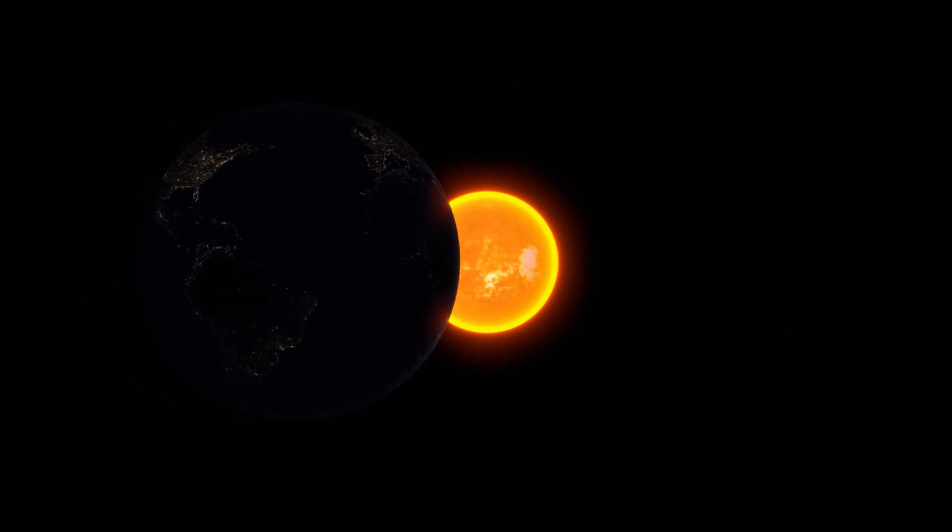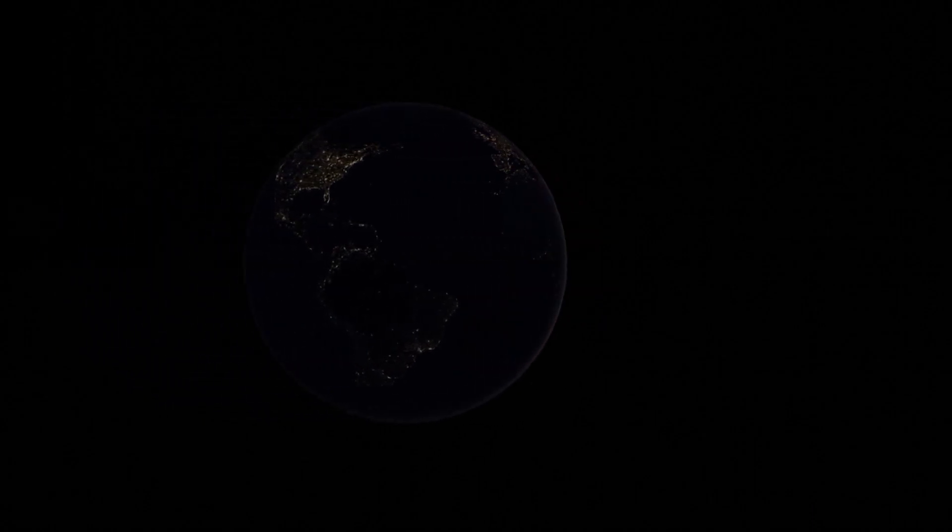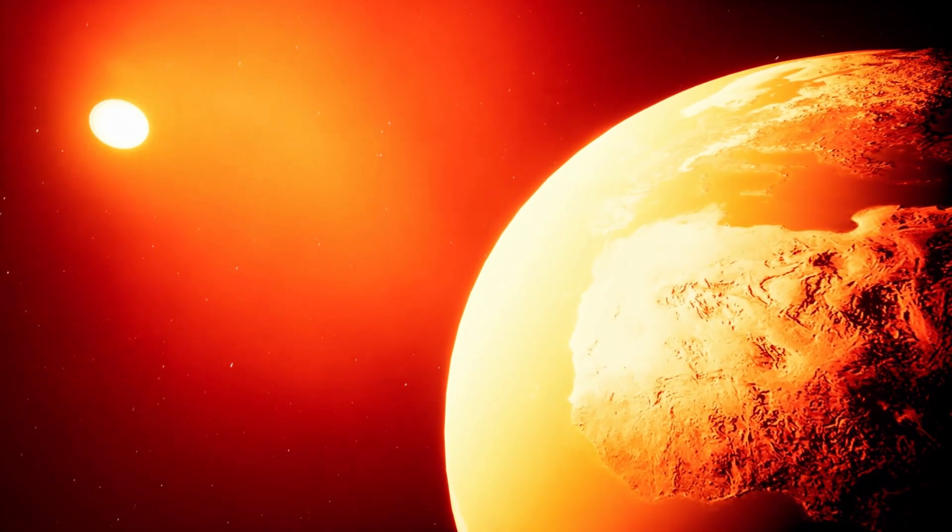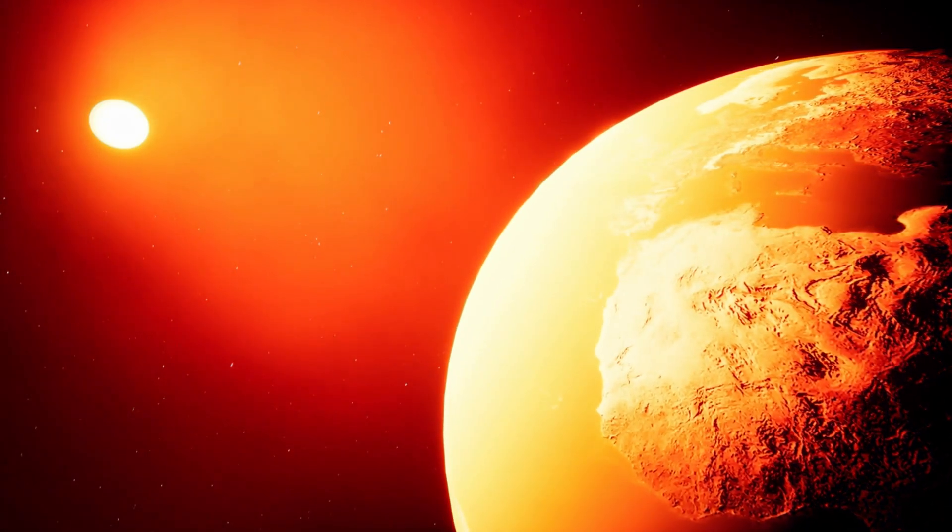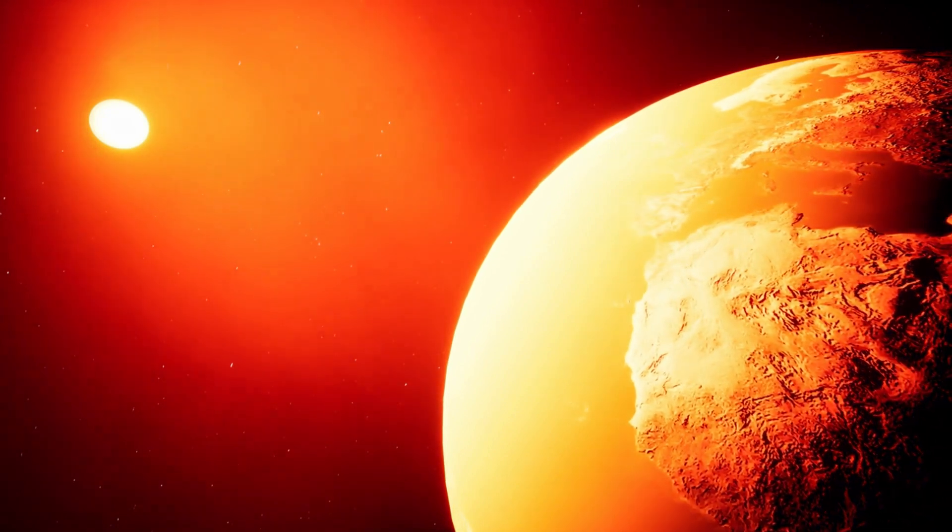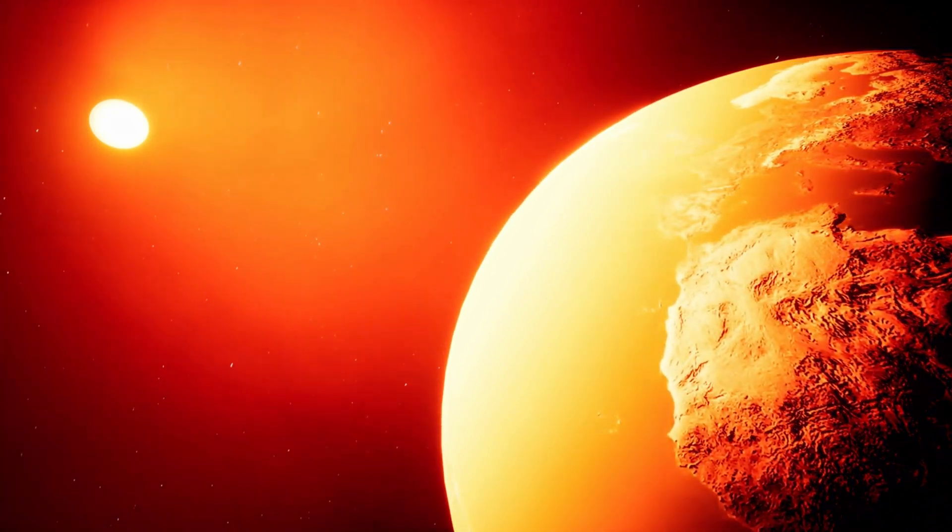But if our planet's trajectory is directed towards the sun, the consequences will be diametrically opposite. As a result of this approach, global warming, or in other words, a typical doomsday scenario, will occur.